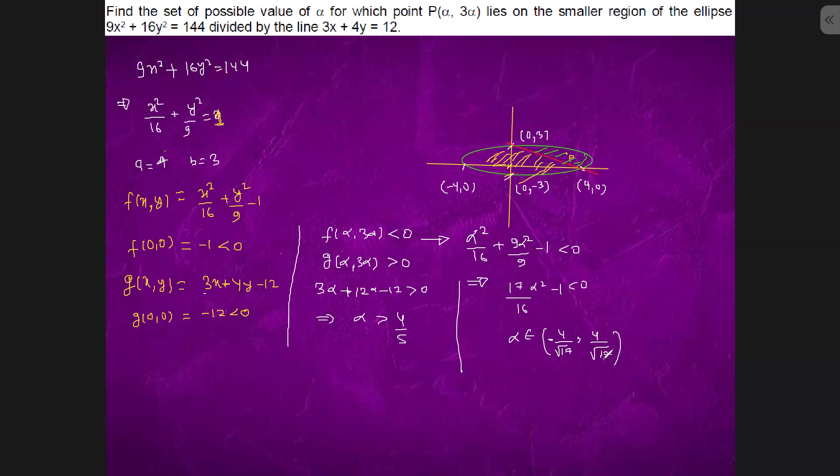So 4/√17 is 4 point something, and 4/5 is near about 1. So α belongs to - we will take the intersection of both - 4/5 to 4/√17.